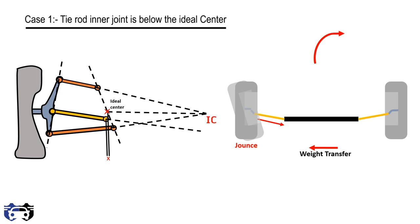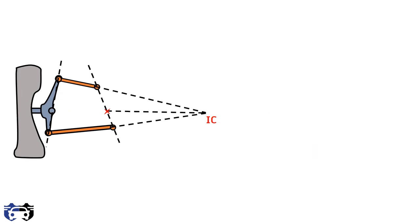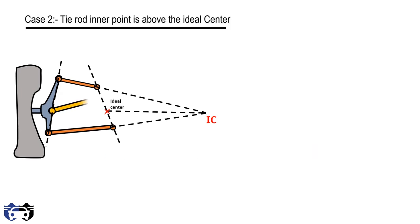The opposite happens with the right tire. During the roll, weight transfers to the left, so there is rebound on the right tire — the linkages move down and the strut expands. This is the opposite effect of jounce and pushes the tie rod outward, also steering the right tire towards the left. So as the car was turning right, roll steer causes both tires to tend to steer left, effectively reducing the steering angle and causing understeer.